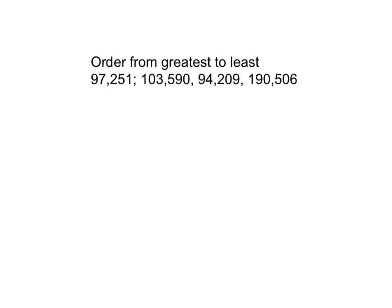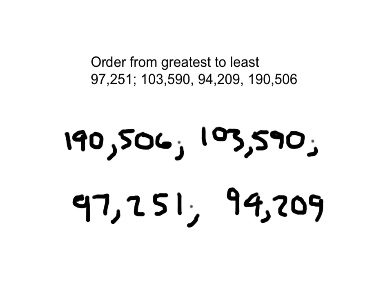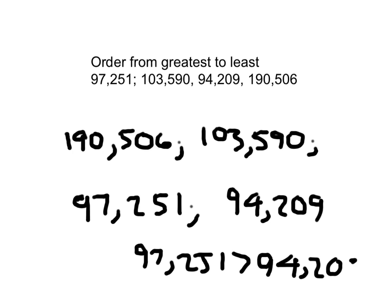Copy this down for yourself, hit pause, and work on it. Be very careful when you are ordering — make sure you have all of them written down correctly and that your answer is reasonable. The answer: 190,506, then 103,590 — wait, 97,000 is still bigger than 94,000, so we have 97,251 and 94,209. Use this strategy and approach: if you need to put them up and down to line up those place values, go ahead and do it. 97,251 is greater than 94,209. Good work today.